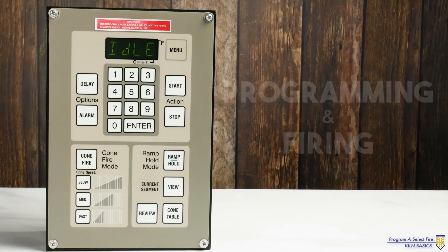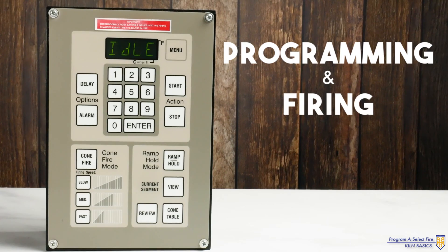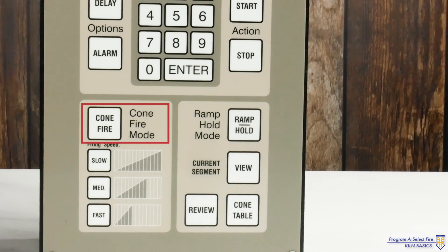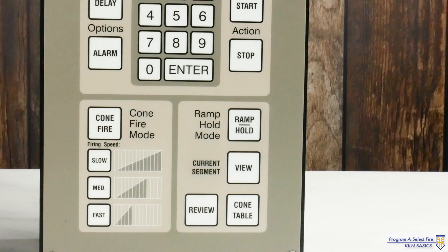There are two main avenues for programming and firing with your select fire. You can use the pre-programmed settings through the cone fire function or you can customize your own program using the ramp hold function.